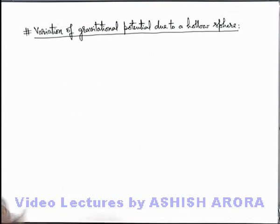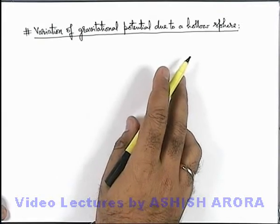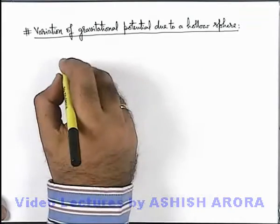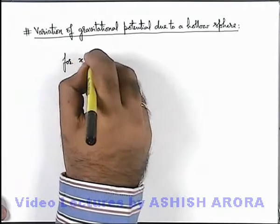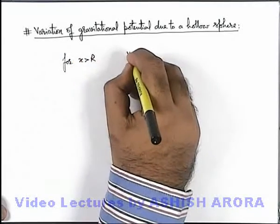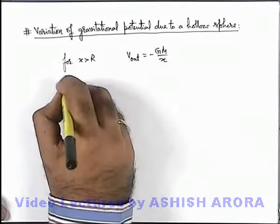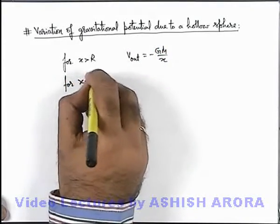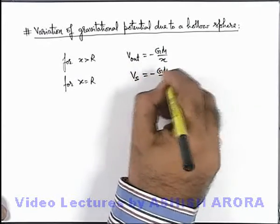Let us discuss about variation of gravitational potential due to hollow sphere. Like on previous slide we have discussed that in a hollow spherical shell for x greater than R, V at outer points we write as minus GM/x, and for x equal to R, that is on surface, potential is minus GM/R.